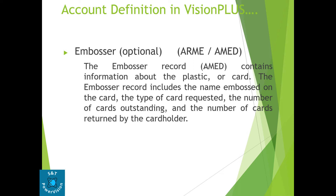After that, the embosser — which is optional. The embosser record contains information about the plastic or card. It includes the name embossed on the card, type of card requested, number of cards outstanding, and the number of cards returned by the cardholder. In the ARME screen we can also see how many primary cards and secondary cards are included, whether the card is a family pack card, etc. Everything related to the cards can be seen in ARME or the AMED file name. If you want to select a card number based on given criteria, those criteria are given in the AMED file through file art, and you can find the card number.